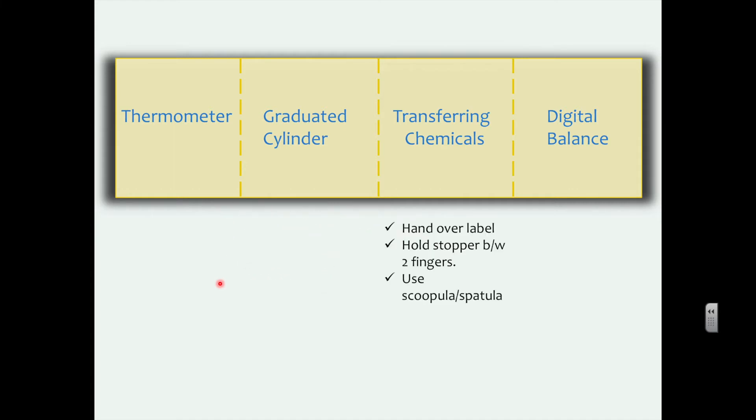Now for transferring chemicals, you want to put your hand over the label, hold the stopper between two fingers, and use a spatula or scupula. That's if it's a solid. Now if it's a liquid, you will obviously pour instead.